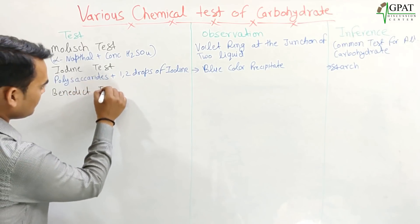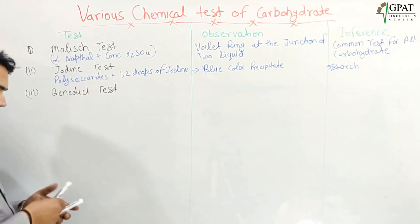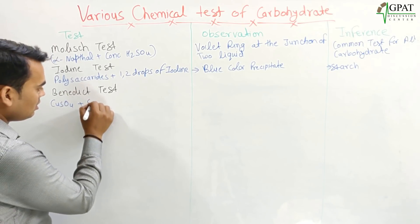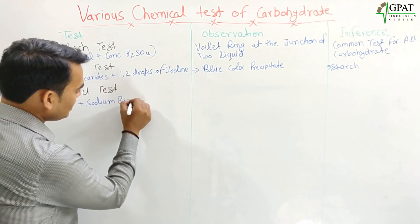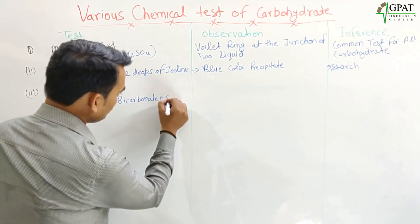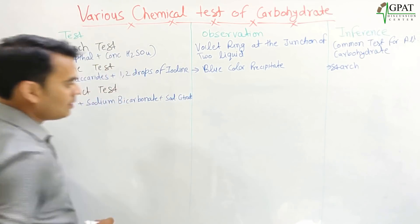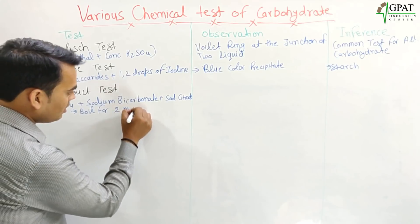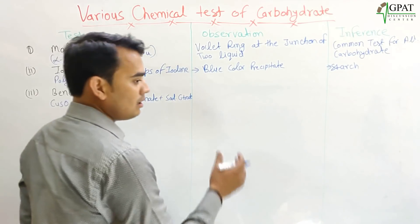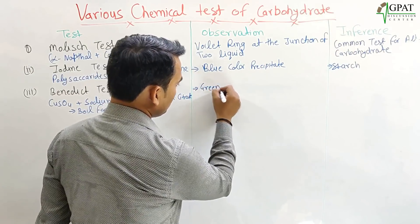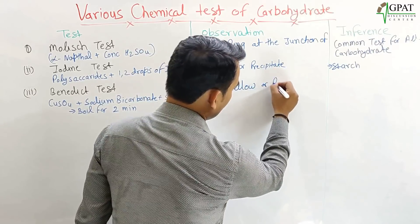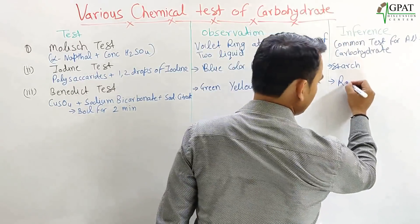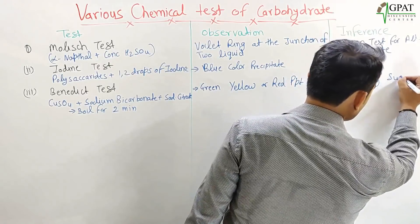The Benedict test: we take copper sulfate, sodium bicarbonate, and sodium citrate, then boil for two minutes. If on boiling it shows a green, yellow, or red precipitate, this confirms the presence of a reducing sugar.